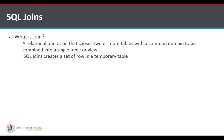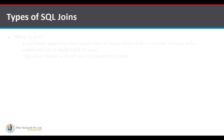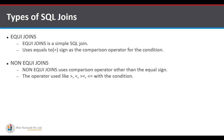There are two types of joins: equi joins and non-equi joins. An equi join is a simple SQL join that uses the equals sign as a comparison operator for the condition. A non-equi join uses comparison operators other than the equals sign, such as greater than, greater than or equal to, less than, or less than or equal to.